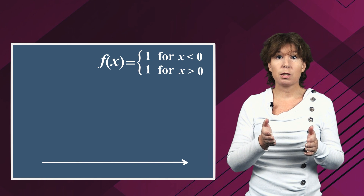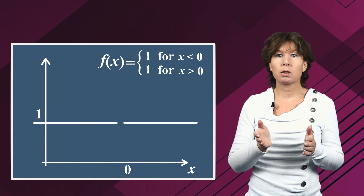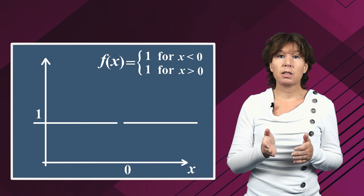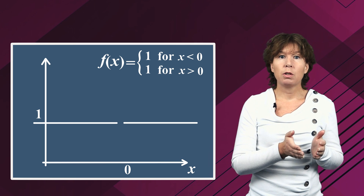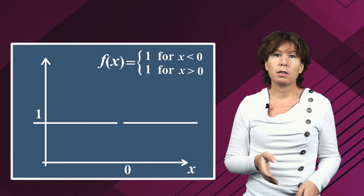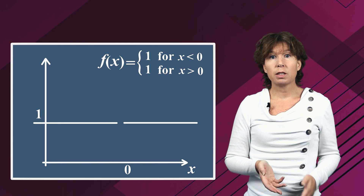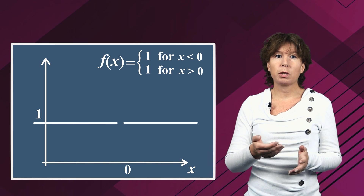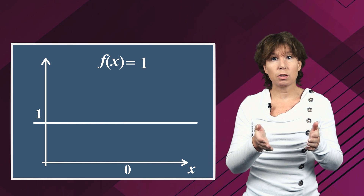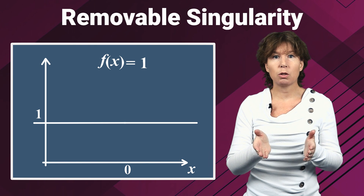It may be not defined just because you didn't define it. If I define, for example, a piecewise function that has the value one for x strictly smaller and strictly larger than zero, then that's not defined exactly at zero. You can't go from left to right, so that's a singularity. It is, however, a singularity that is easy to remove just by filling in the missing point. Correspondingly, this is also called a removable singularity.